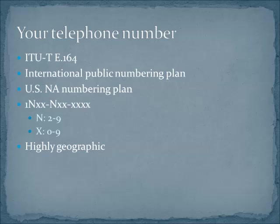Here in the States, our structure is a 1 followed by an N value, then the X's, then N-X-X, and then finally X-X-X-X. The N can be a value anywhere from 2 to 9, and the X can be a value anywhere from 0 to 9. We're not adding country codes in this case, but we will talk about what each one of these sections means. The last thing I want to mention is that telephone numbers are highly geographic, because we're talking about circuits and where they run. When you dial a phone number, you're getting pretty close to that person's actual physical location — within limits, of course.